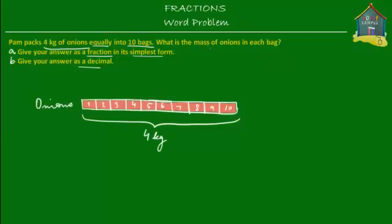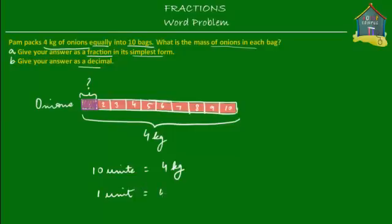Now what we have to find out is the mass of onions in each bag. So how much is the mass of onions in each of these bags? We have to find out what this is equal to. 10 units are equal to 4 kilograms, then one unit would be equal to 4 kilograms divided by 10. One unit here means one bag, so the mass of onions in each bag would be 4 kilograms divided by 10.